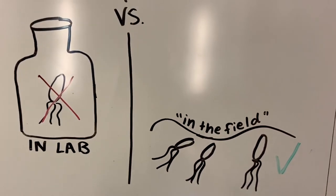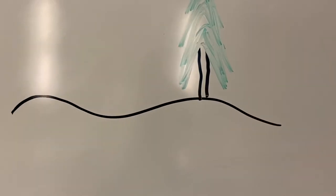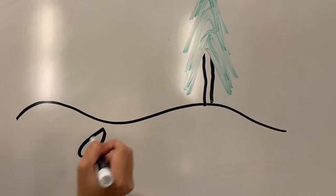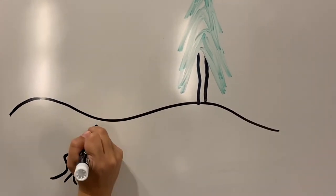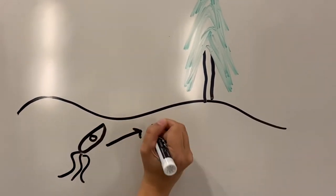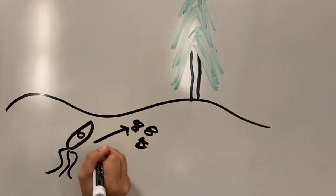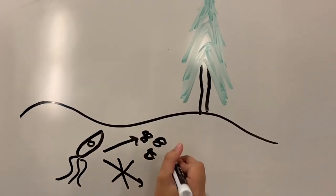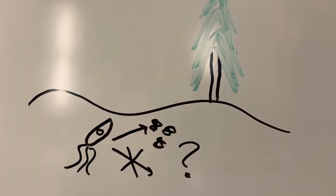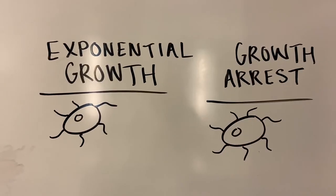As for bacteria that are culturable and have been studied in laboratory settings, it is still difficult to predict how these organisms will survive in nature since bacteria behave vastly differently in the lab than in the environment. Bacteria have two main life states, exponential growth and growth arrest.